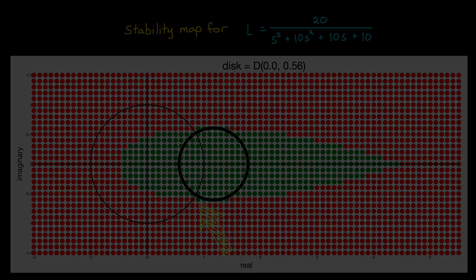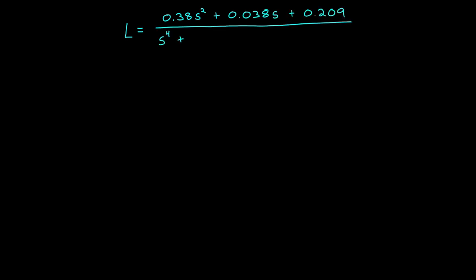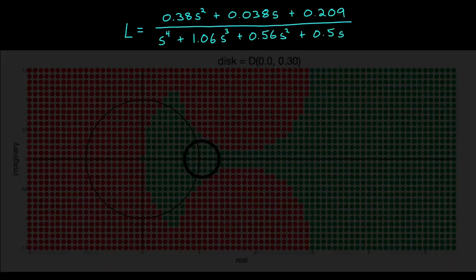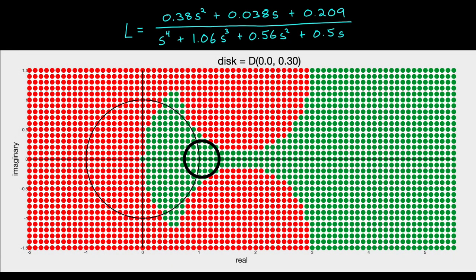But if we look at a different system, this one where L is this fourth order transfer function that I created, you can see that the stability map for this system produces this concave shape. And this results in a huge difference between classical margins, which are infinite in gain and about 70 degrees in phase, and the disk margins, which are much, much smaller. This tells us that our system is very robust to pure phase or pure gain variations, but not very robust to combinations of gain and phase.